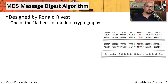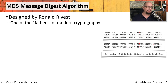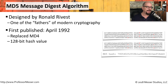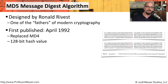One type of hash that's been around for a while, but you'll still see it in use today, is MD5, or the MD5 Message Digest algorithm. It was created by Ronald Rivest and published in April of 1992. It was designed to replace MD4 with this newer version called MD5.